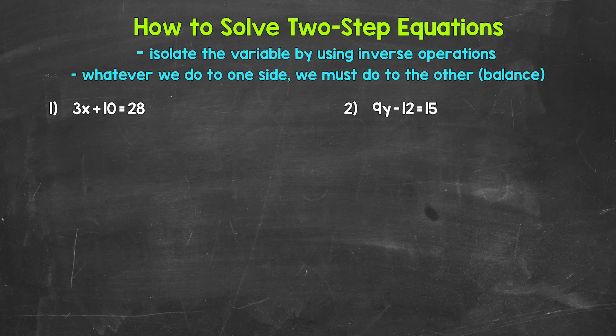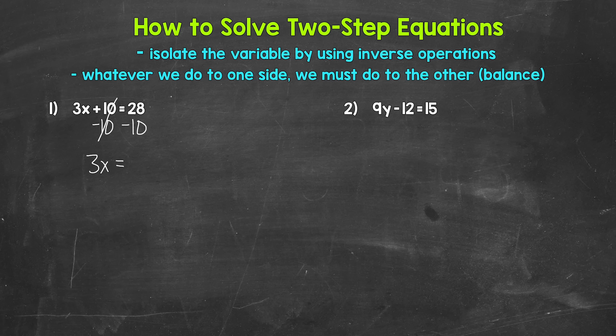What's the inverse — the opposite of addition? Well, subtraction. So let's subtract 10 from the left side of the equation. Whatever we do to one side of the equation, we must do to the other, so subtract 10 from the right side as well. On the left side, we are adding 10 and subtracting 10, so these 10s cancel each other out. We are left with 3x equals, and on the right side, 28 minus 10 gives us 18.